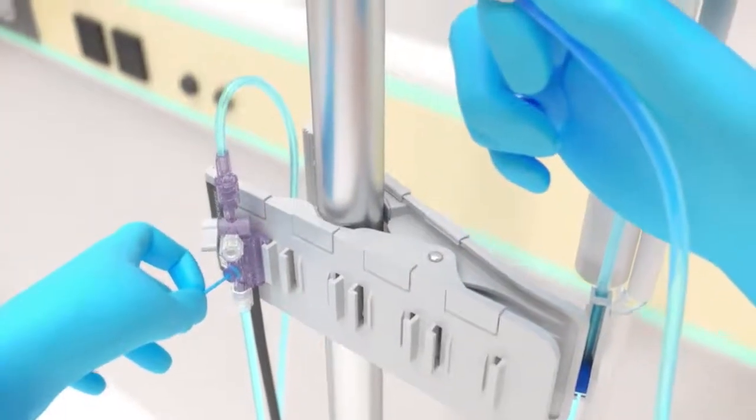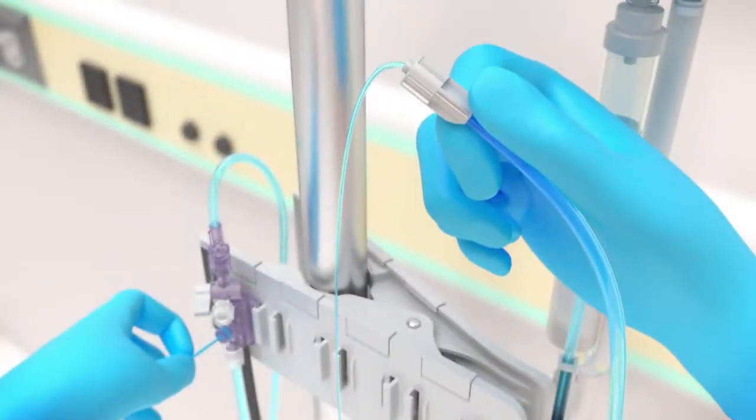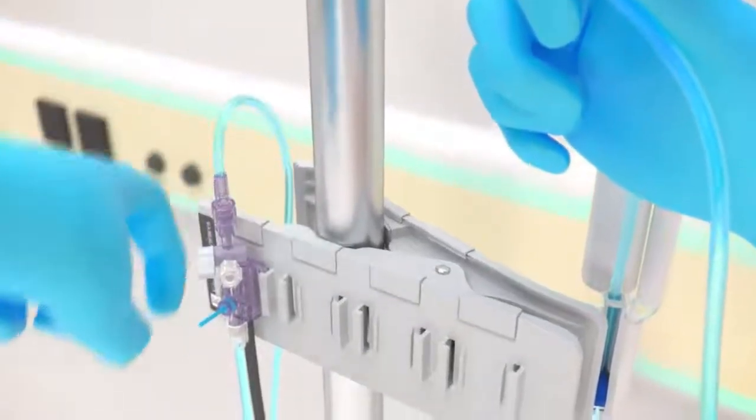Pull the snap-tab to flush the system under pressure while tapping on the tubing and stopcocks to remove any residual bubbles.